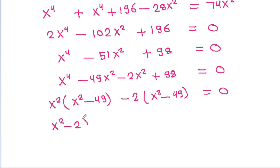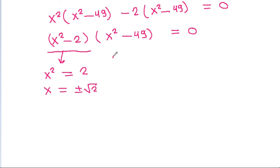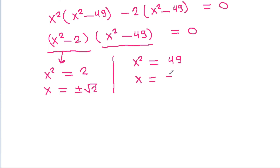So x squared minus 49 equals 0, giving x equals plus or minus 7. And from x squared minus 2 equals 0, we get x equals plus or minus square root of 2. We have y equal to x minus 14 divided by x.